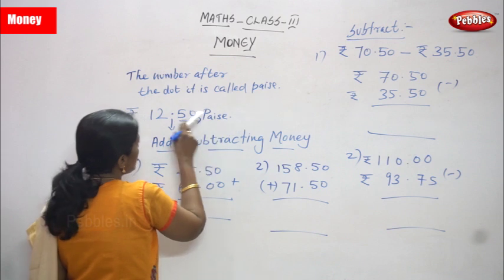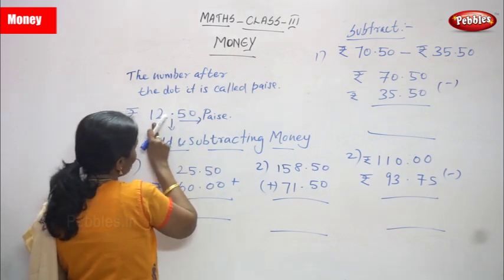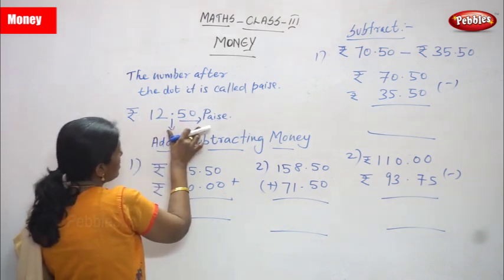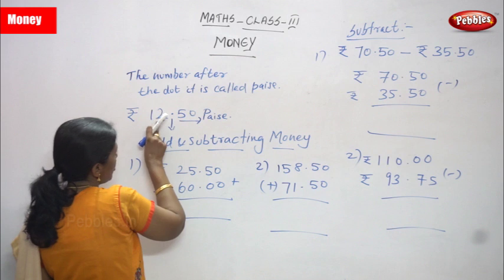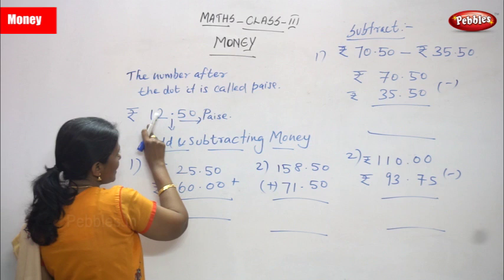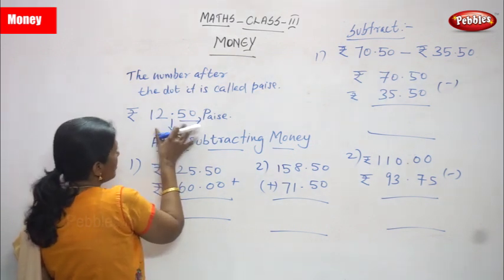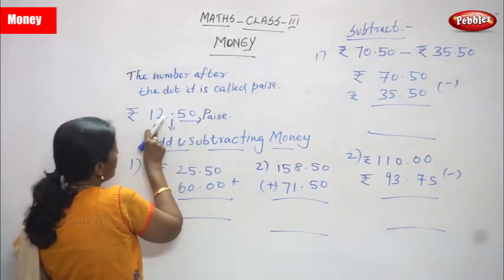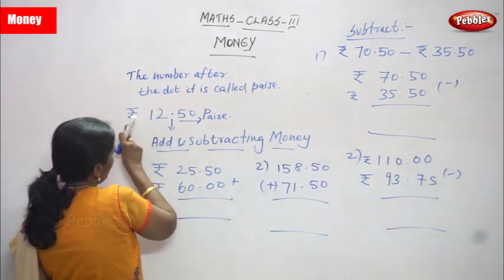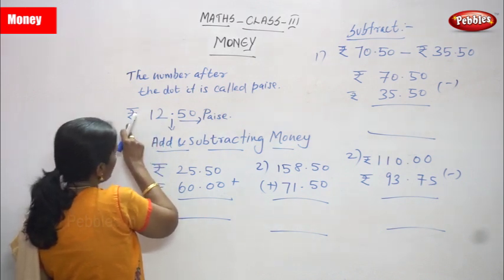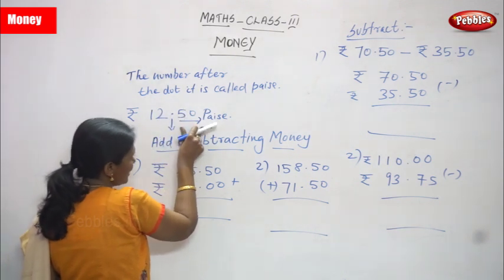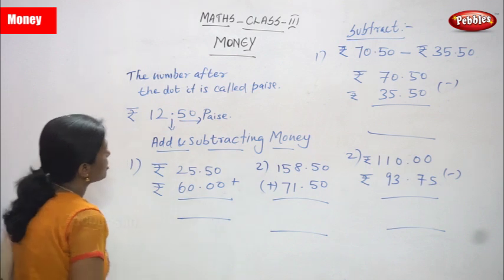Before the dot, the number is rupees. So rupees and paise — 12 rupees 50 paise. How we write this is: 12, then a dot in between, then 50. The rupees symbol you have to write in front of the number. After the dot, we write the paise. So 12 is rupees and 50 is paise.